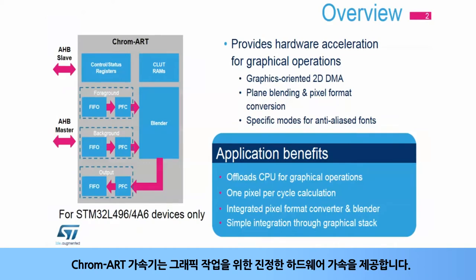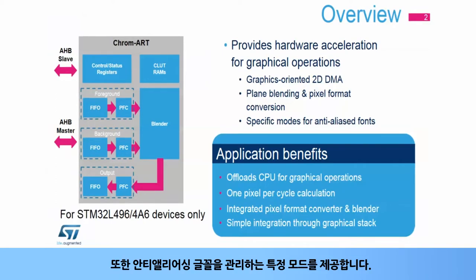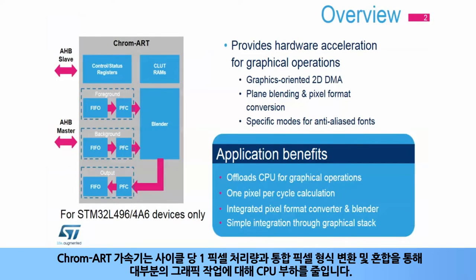The Chrom-ART Accelerator offers true hardware acceleration for graphical operations. It is built around a 2D DMA engine for fast data copy with specific functions to support pixel format conversion as well as blending operations between two planes. It also provides specific modes for managing anti-aliased fonts, and will offload the CPU for most graphical operations with a 1 pixel per cycle throughput, integrated pixel format conversion, and blending.